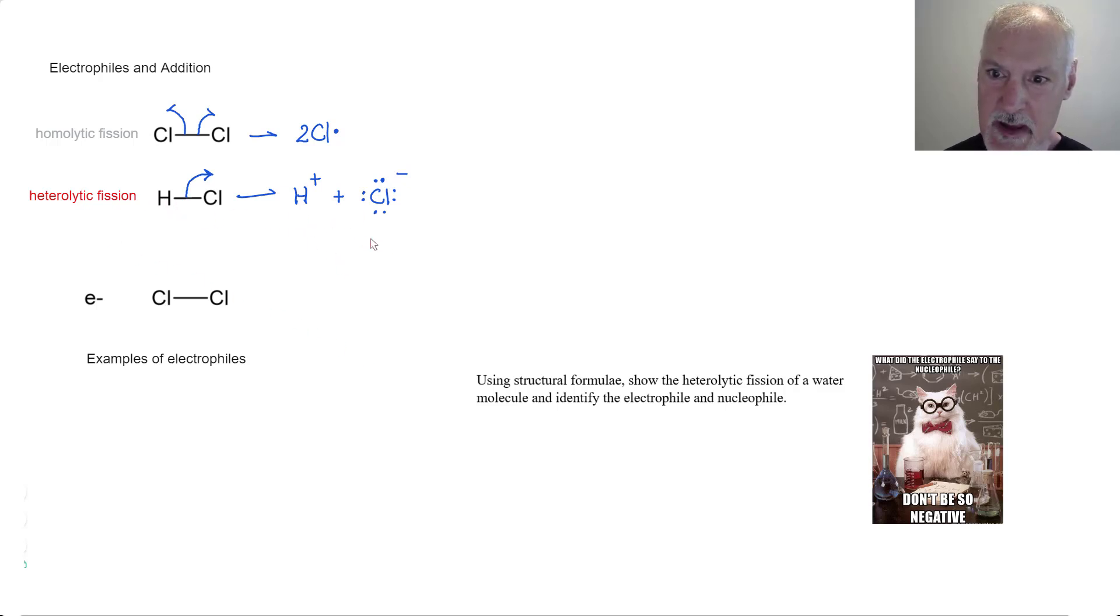This produces, as I mentioned, these two species, the hydrogen ion. The hydrogen ion is classified as an electrophile. It's electron deficient. It needs electrons. And it's therefore able to accept a pair from some other substance. Our chlorine, on the other hand, is what we call a nucleophile. And we've seen those before. They're able to donate a pair of electrons.